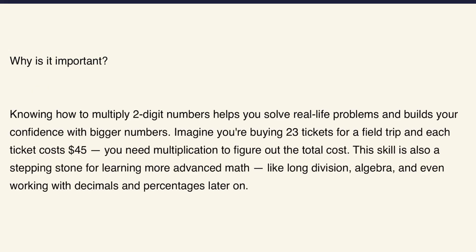Knowing how to multiply two-digit numbers helps you solve real-life problems and builds your confidence with bigger numbers. For example, if you're buying 23 tickets for a field trip and each ticket costs $45, you need multiplication to figure out the total cost. Or maybe you're helping your family tile a floor and need to find the area of a room that's 24 feet by 36 feet — you'd use multiplication for that too.